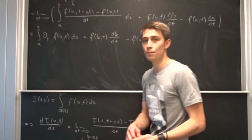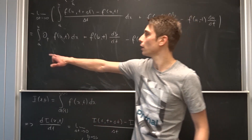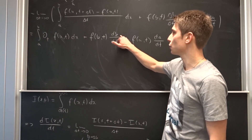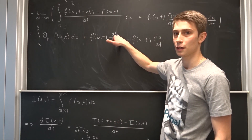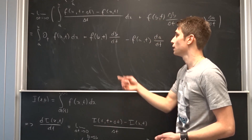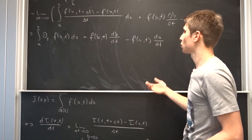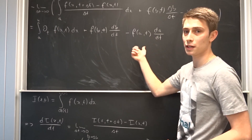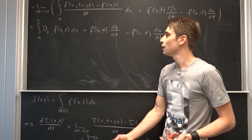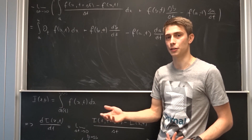Like I said before, the thing in the beginning was just a special case. Notice that if our upper and lower bounds are independent of t, that means if we differentiate b with respect to t, b would just be a constant so db/dt would be zero. The same with a. So in the special case where the upper and lower bounds are constants, we would just end up with the interchange of the integral and the derivative.